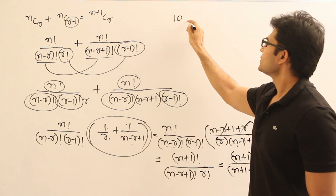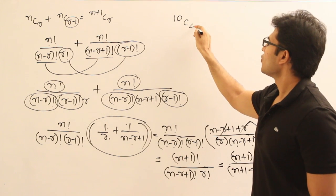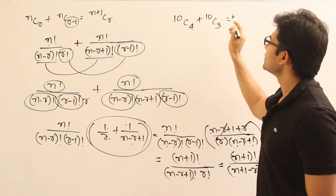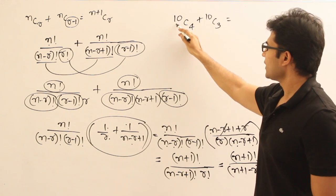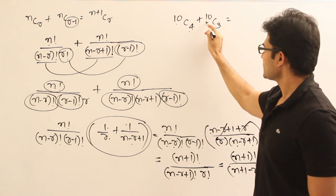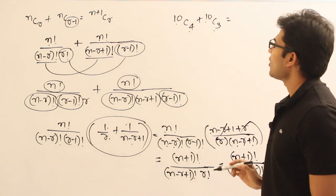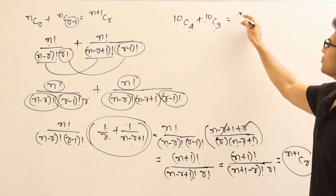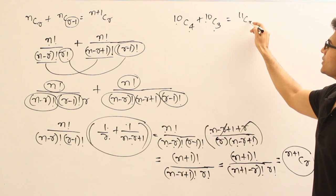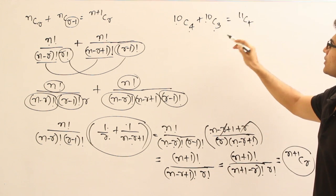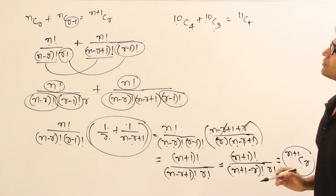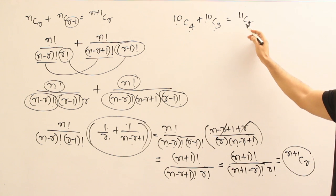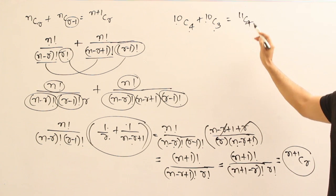For example: 10C4 + 10C3. Using the property nCr + nC(r-1) = (n+1)Cr, this equals 11C4. The reason is n plus 1 gives 11, and r remains 4.